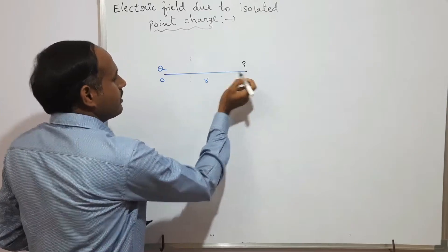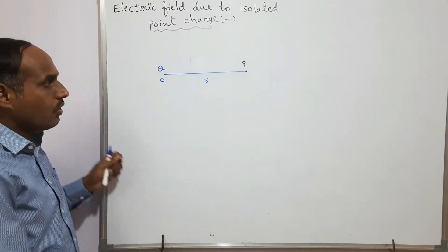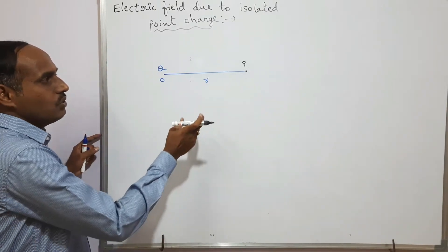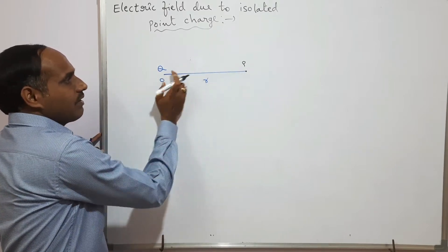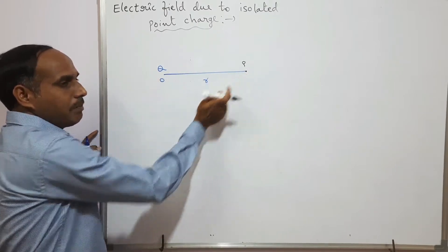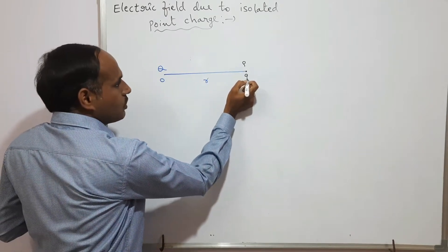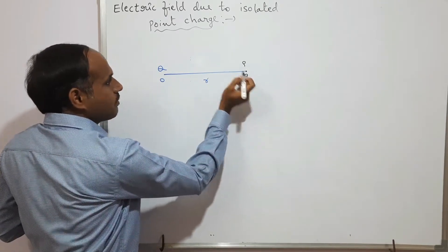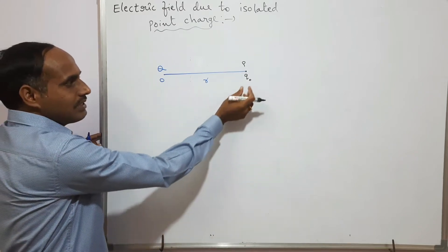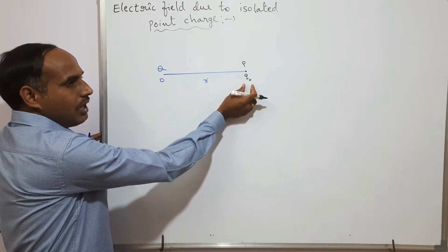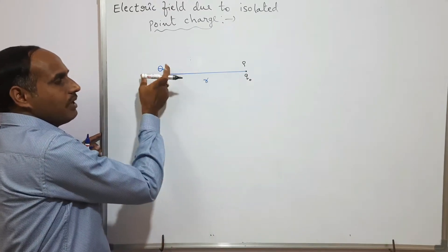From this charge, at a distance r, I want to find the electric field strength at a point P. In order to know the strength of this electric field due to this charge at point P, I am keeping one test charge q₀ at this point. When I place this test charge q₀, some force is exerted on q₀ by q.